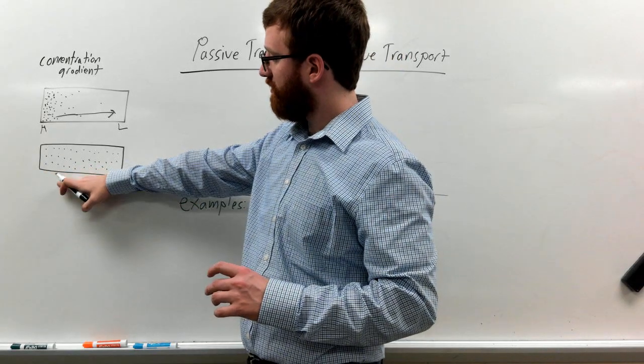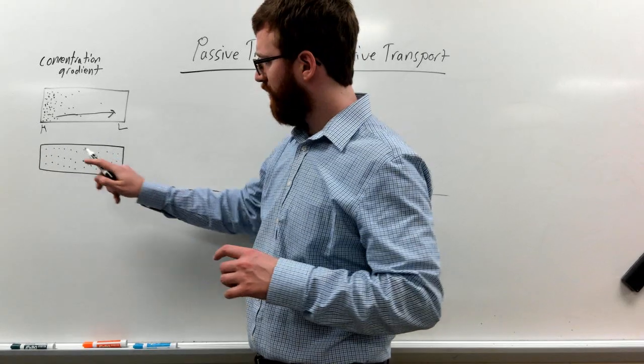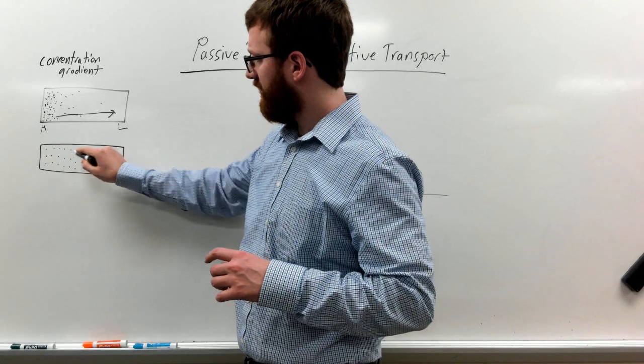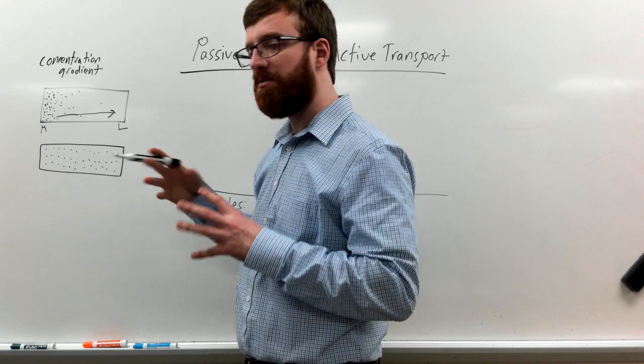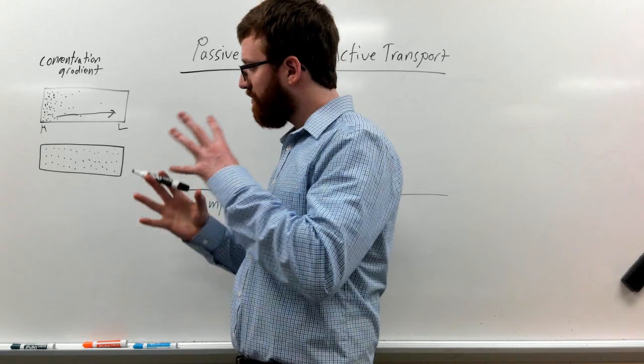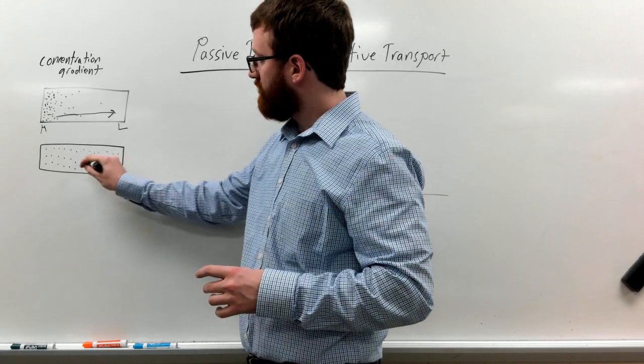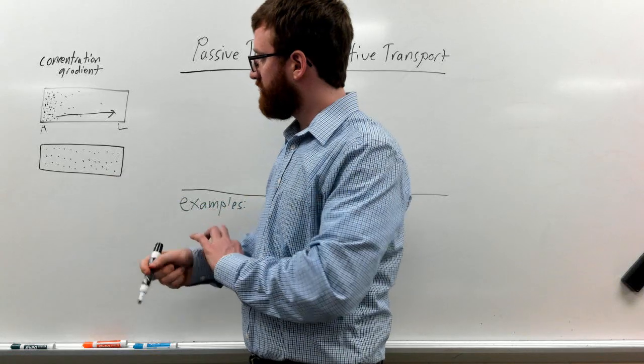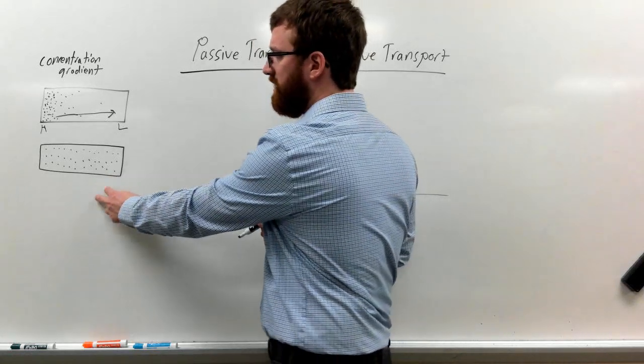And eventually they will reach equilibrium, where if you look here, you have each and every little dot or little particle almost equidistant to where the other dots are. So it almost kind of looks like a grid, and that's equilibrium.